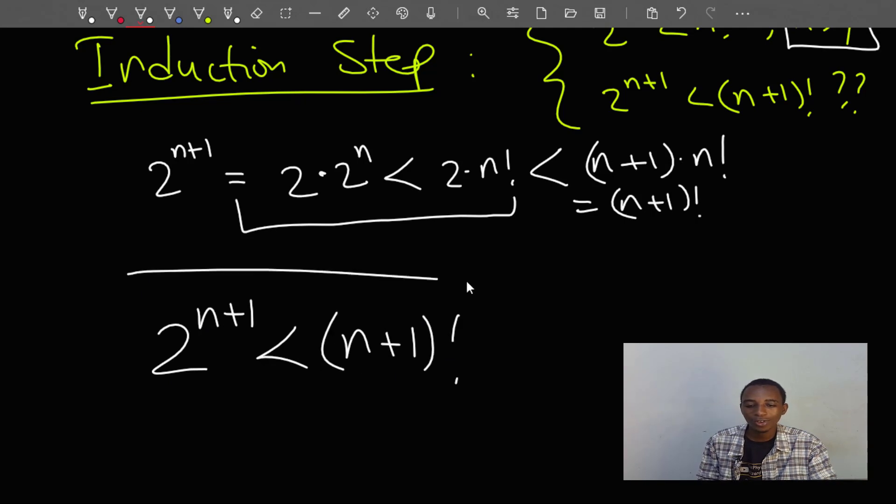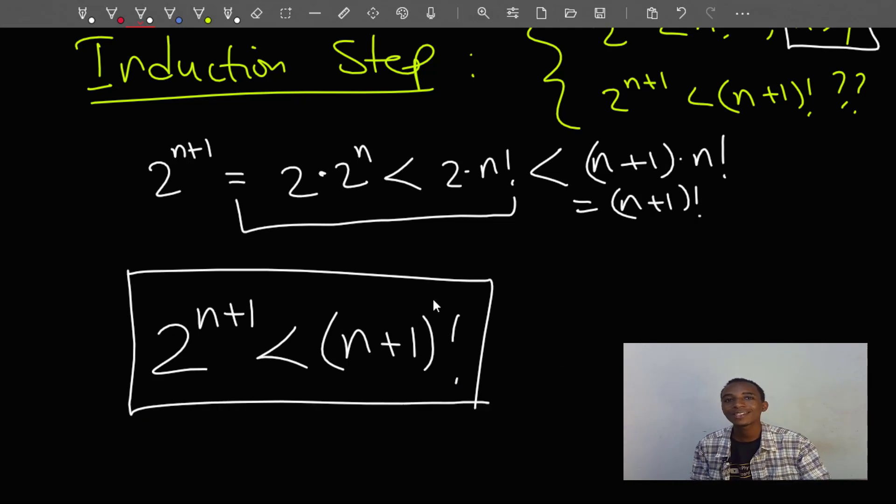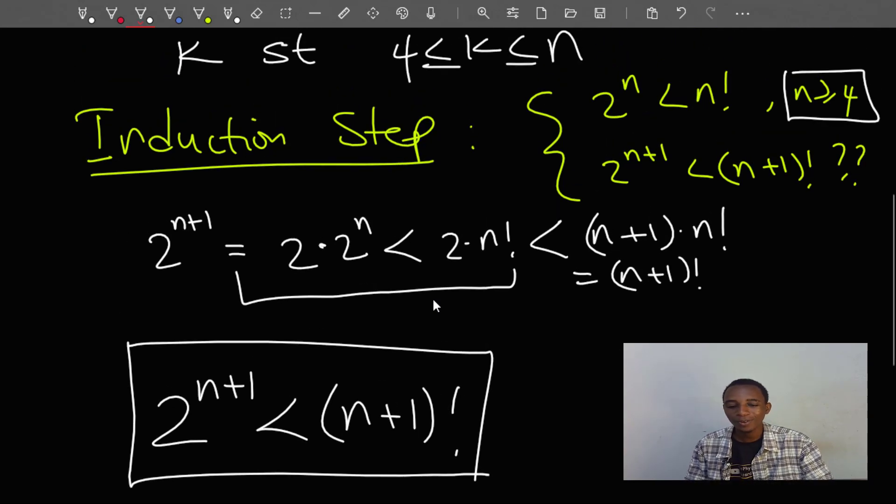So I'll write this finally as 2 to the power n plus 1 is less than n plus 1 factorial. And this should complete the proof. So there we have it. Our proposition that 2 to the power n is always less than n factorial for n greater than or equal to 4 is true.